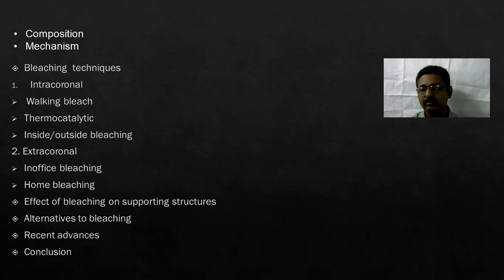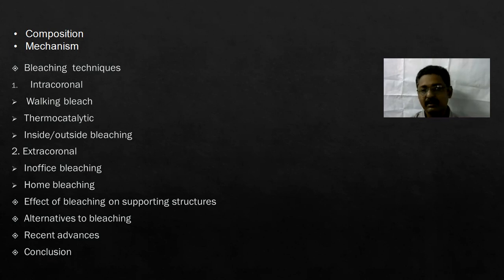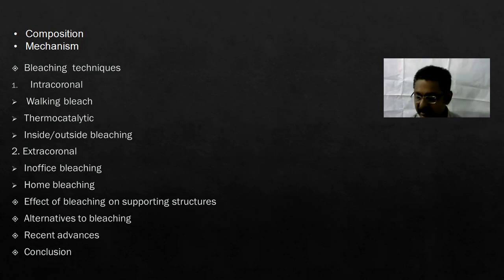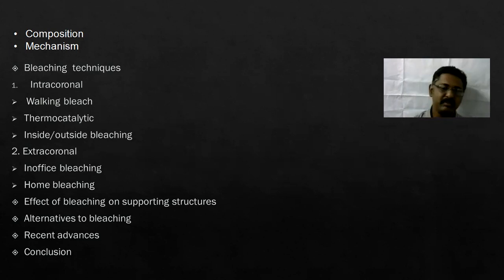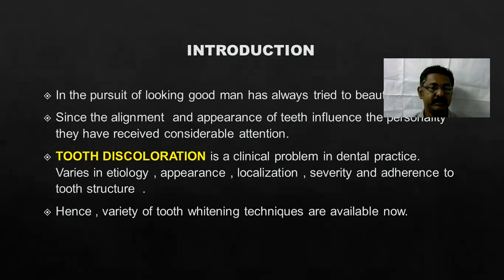Intra-coronal tooth bleaching we can again subdivide into walking bleach, thermocatalytic, and inside-outside bleaching. Then extra-coronal — again it is in-office bleaching and home bleaching. Then the effect of bleaching on the supporting structures. The different alternatives to bleaching — we can go for veneers, we can go for crowns, all those alternatives. Then recent advances in bleaching and conclusion.